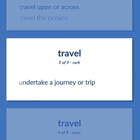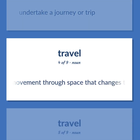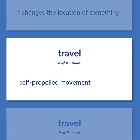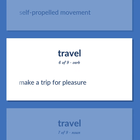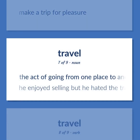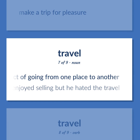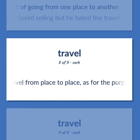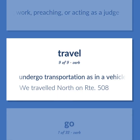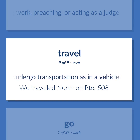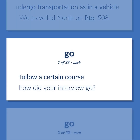Travel: undertake a journey or trip. A movement through space that changes the location of something. Self-propelled movement. Make a trip for pleasure. The act of going from one place to another — he enjoyed selling but he hated the travel. Travel from place to place, as for the purpose of finding work, preaching, or acting as a judge. Undergo transportation as in a vehicle — we traveled north on Route 508. Follow a certain course — how did your interview go?